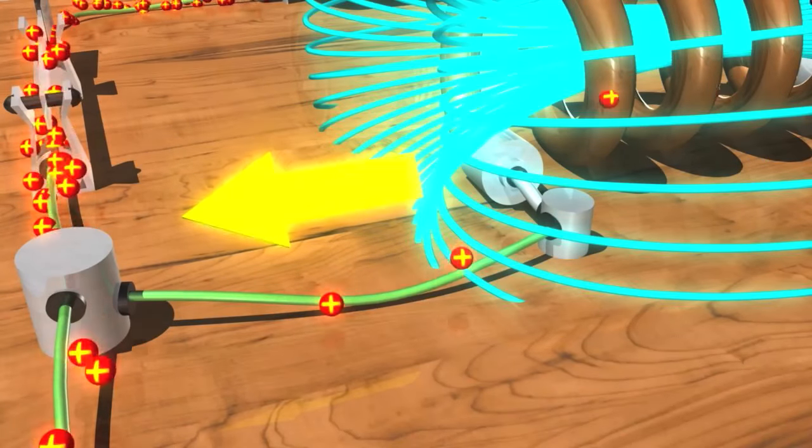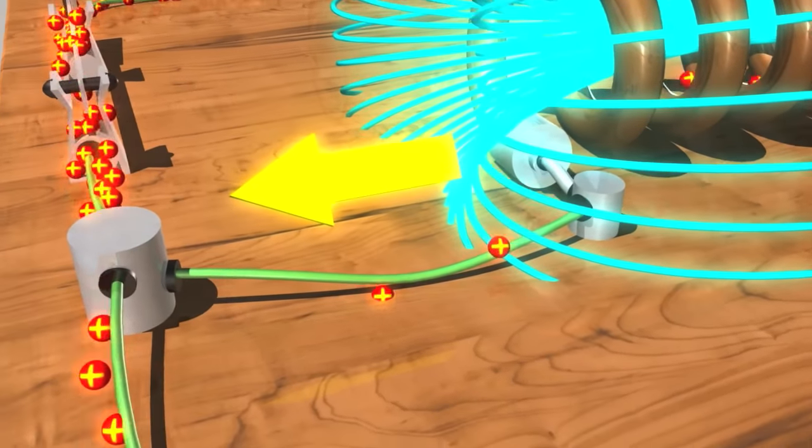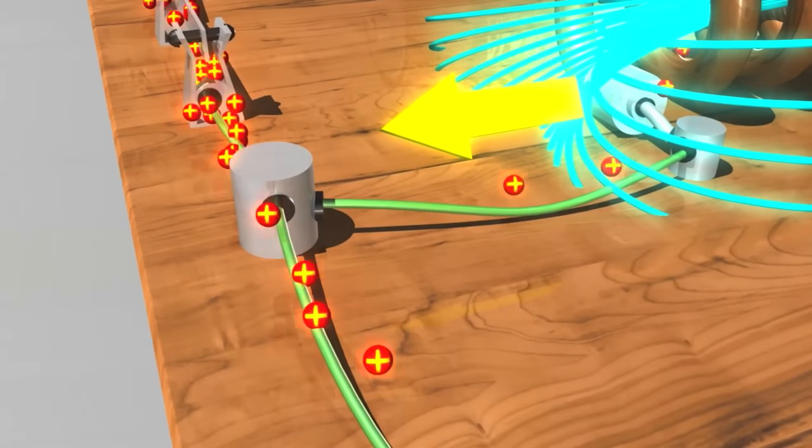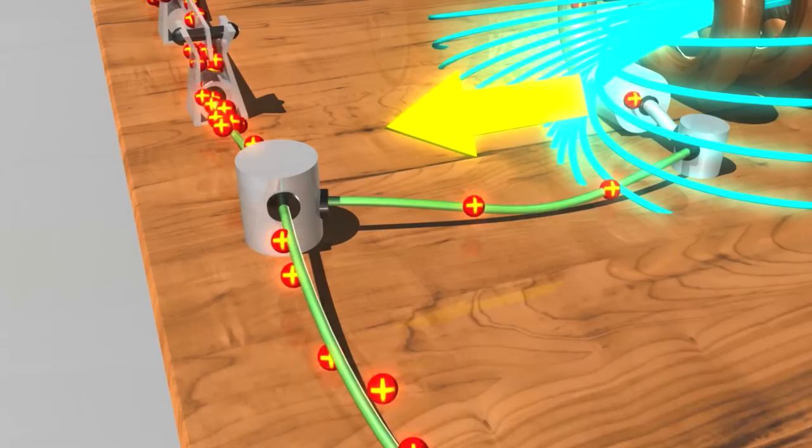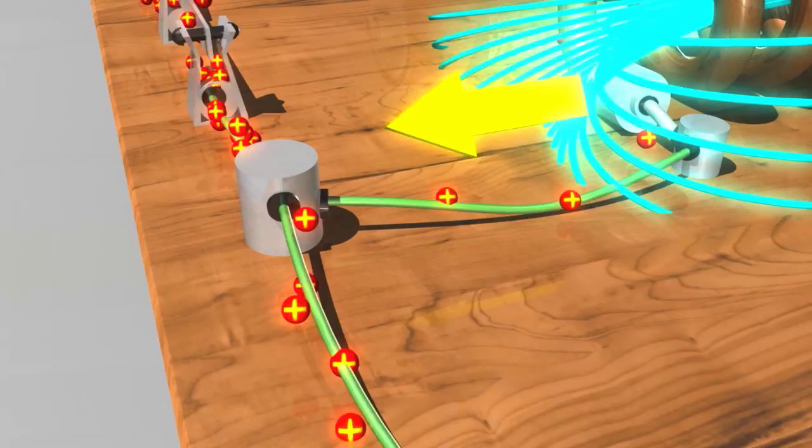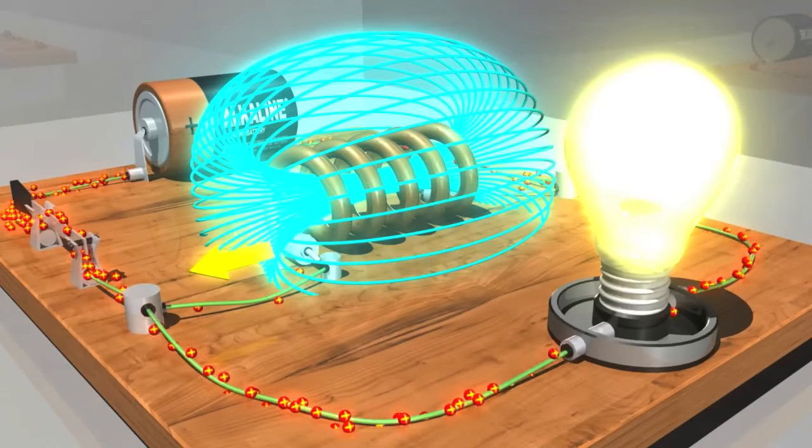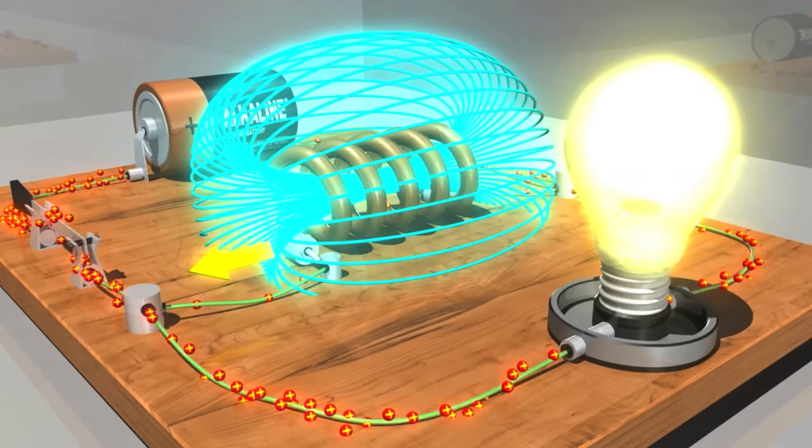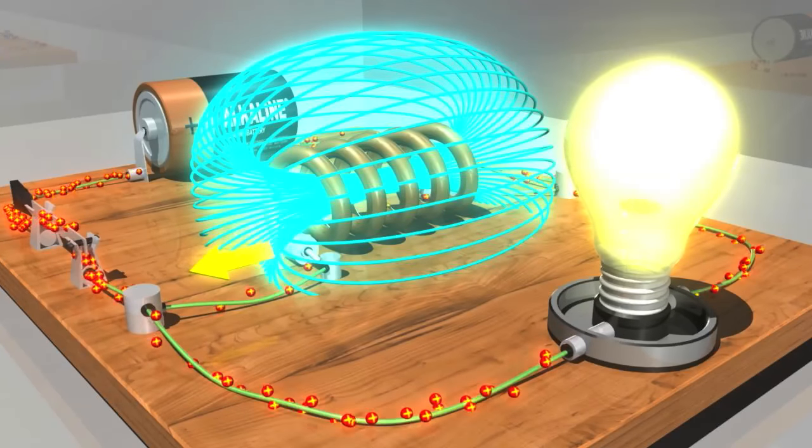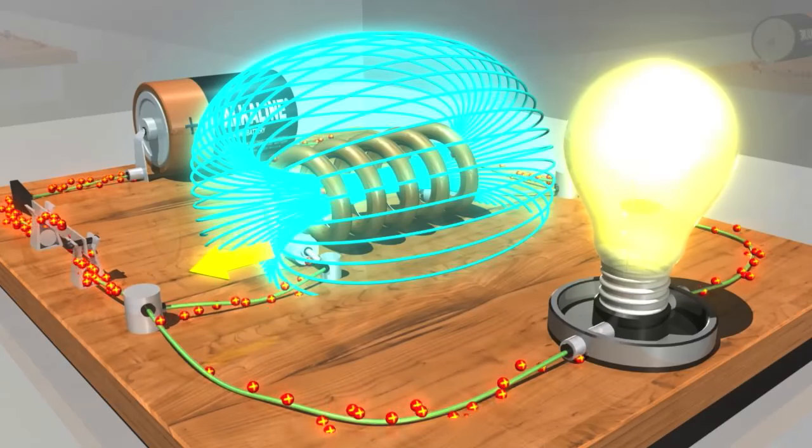Back EMF always opposes the change that created it. So in this instance, the back EMF is opposing the change created by turning on the circuit. It opposes the current. The result, as you can see, is that the back EMF effectively diverts the current away from the inductor and toward the light bulb. This causes the bulb to light up, but only briefly.